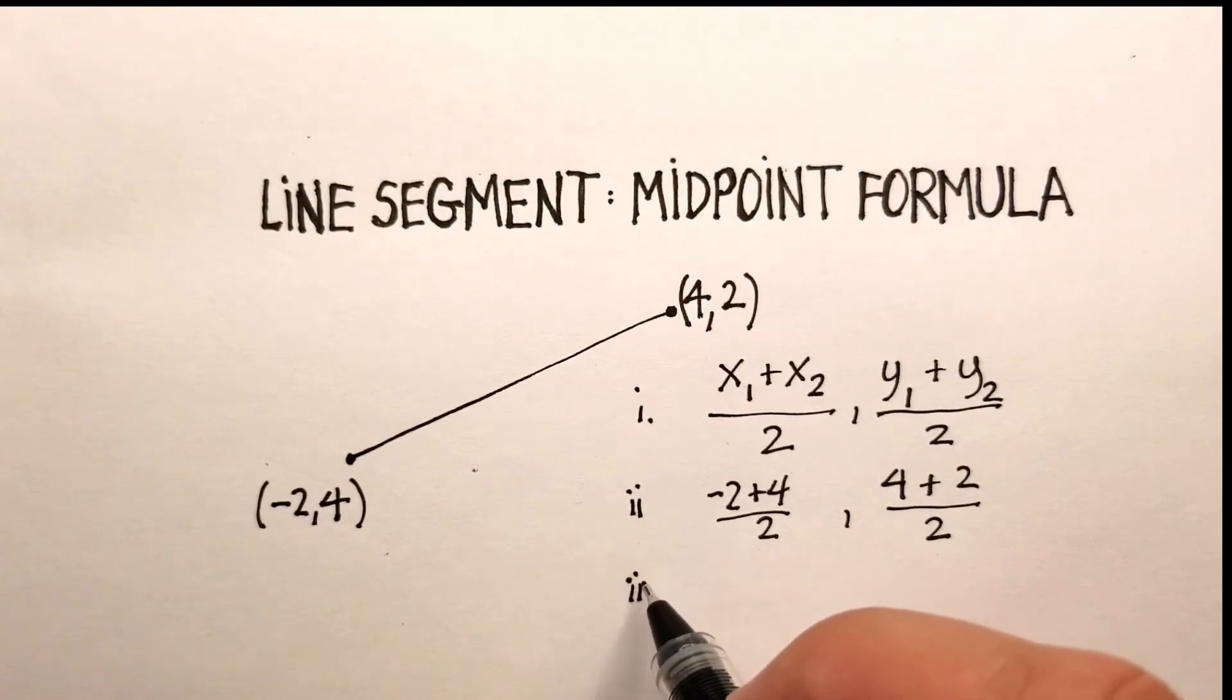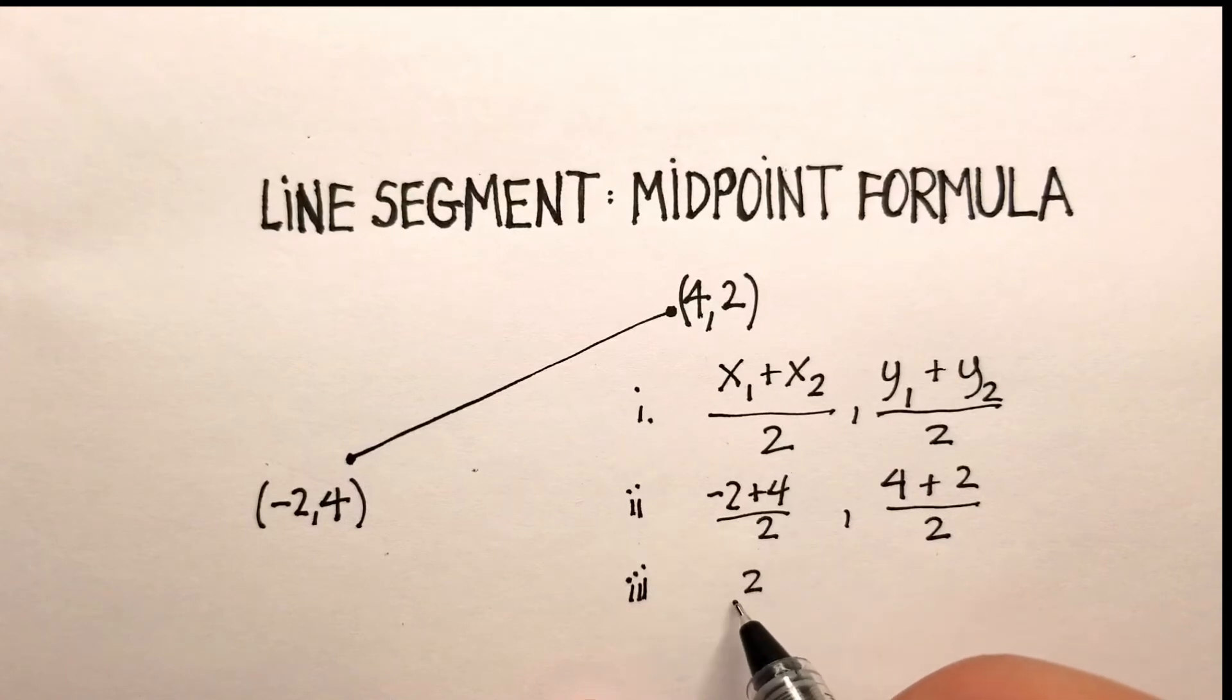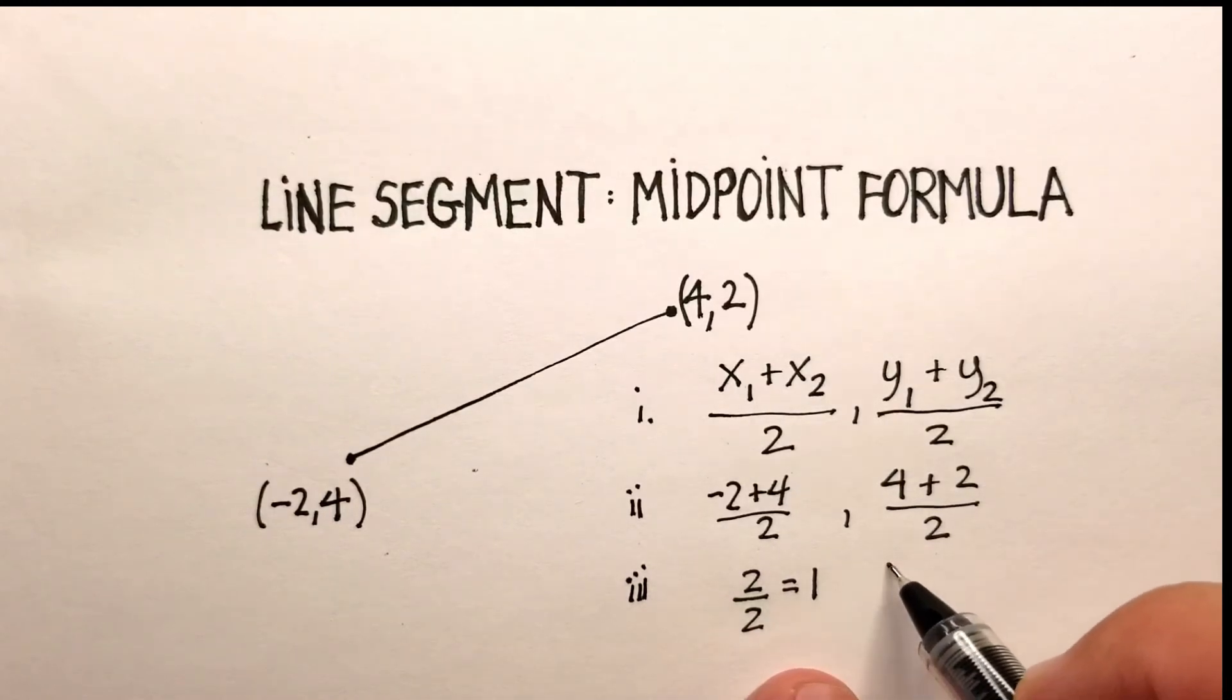Third step. So negative 2 plus 4 is a positive 2. Positive 2 divided by 2 gives me a positive 1. 4 plus 2 is 6. 6 divided by 2 gives me 3.